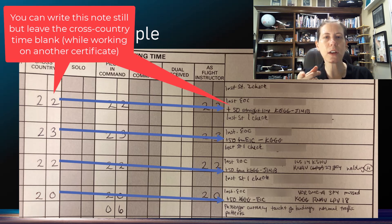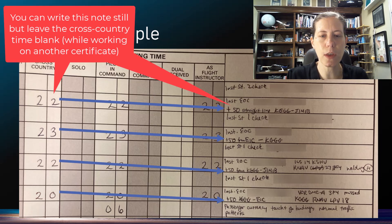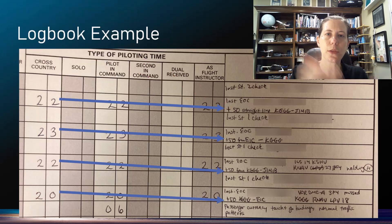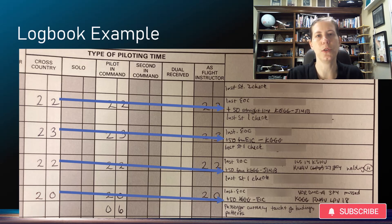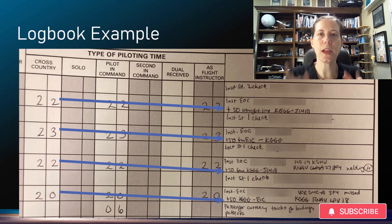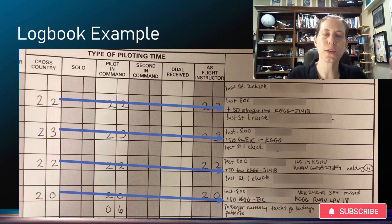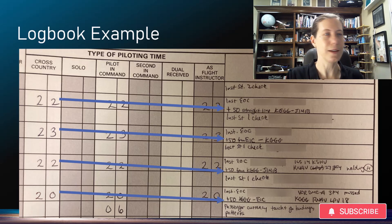Start logging the cross-country time now, keep track of it, and later you can go back through your logbook and see where you have hours you can apply toward your 500 hours of cross-country required for ATP. If you like this and you're embarking on a commercial aviation career, like and subscribe, check out my other videos, and have an awesome day!